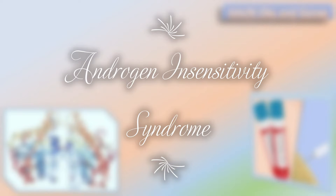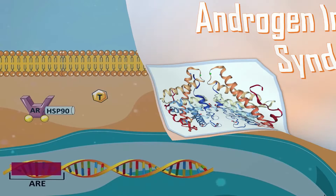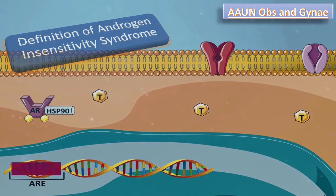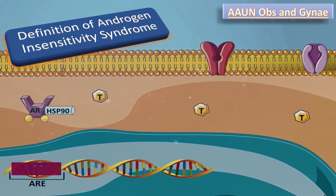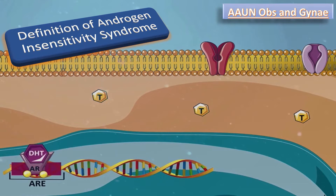Today we will talk about a very important topic of DST and that is called Androgen Insensitivity Syndrome (AIS). It is a condition in which a person who is genetically male, meaning one having X and Y chromosomes, is resistant to male hormones called androgens. As a result, the person has some of the physical traits of a woman but the genetic makeup of a man.